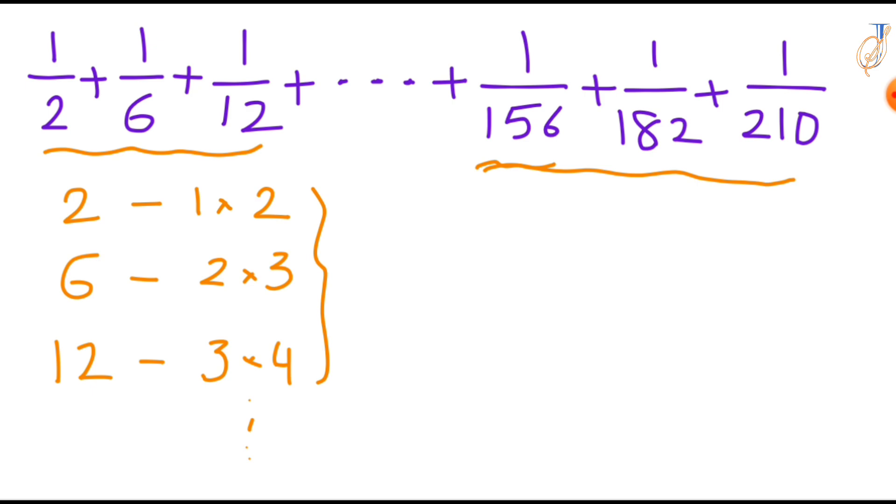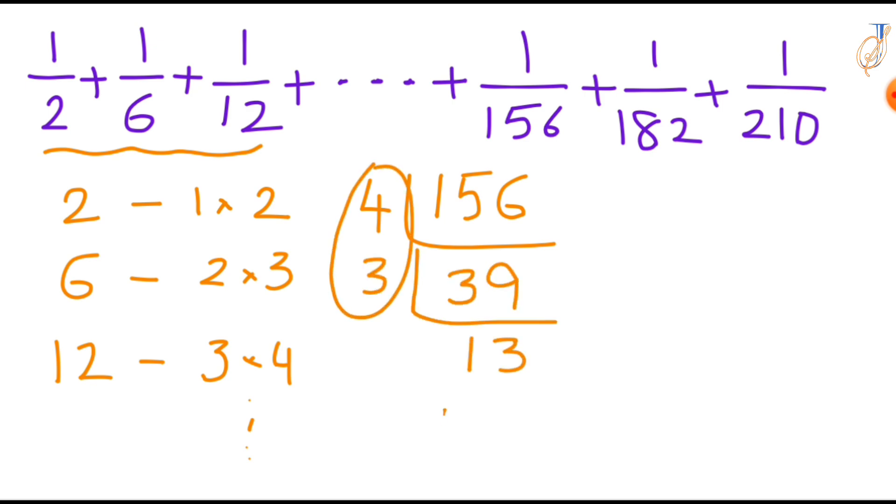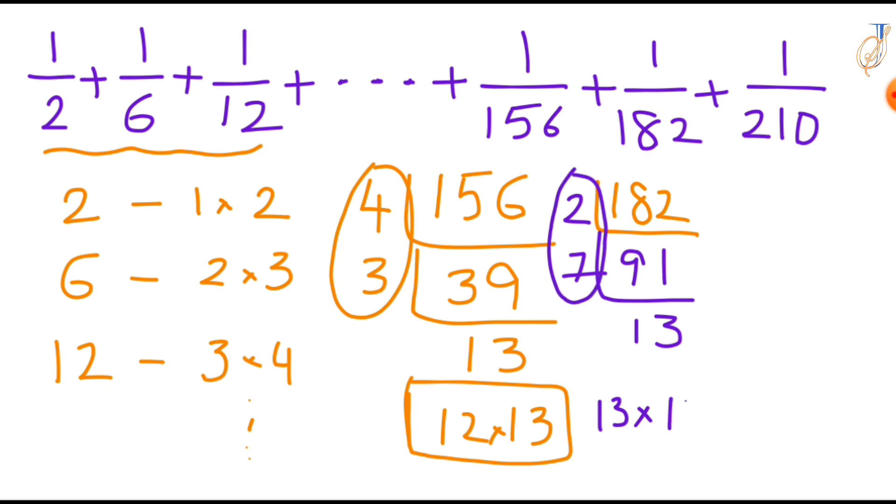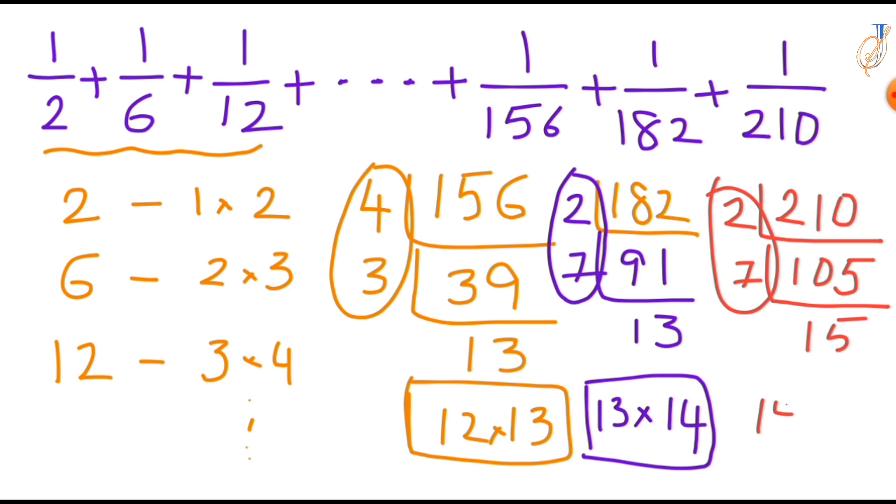Is it also product of consecutive integers? Let's check for that, first find the factor of 156. So this we can write it as 4 times 3 is 12, 12 times 13. Now find the factors of 182. This we can write it as 13 times 2 times 7 is 14. Find the factors of 210. So this one we can write it as 2 times 7 is 14, 14 times 15.